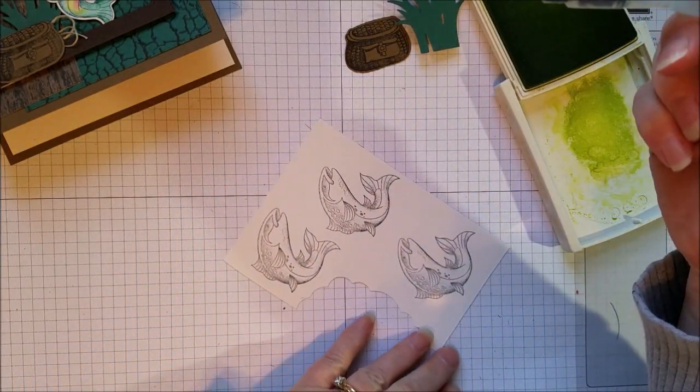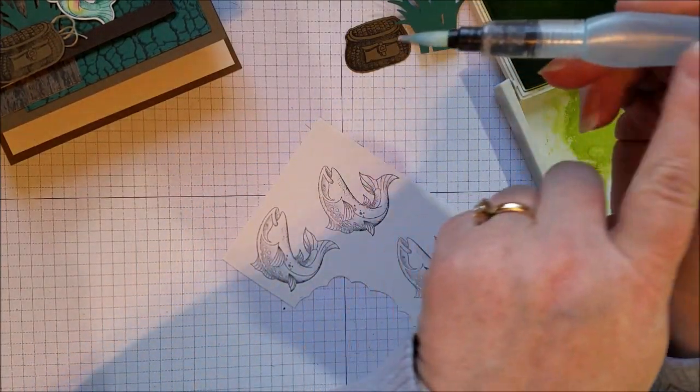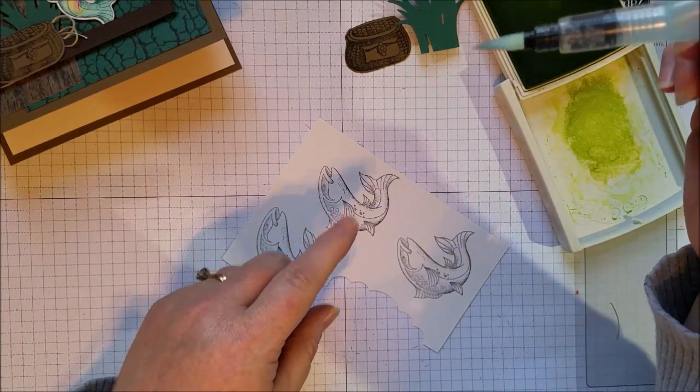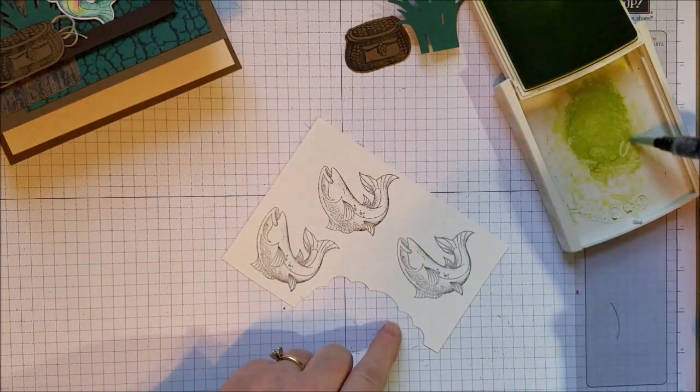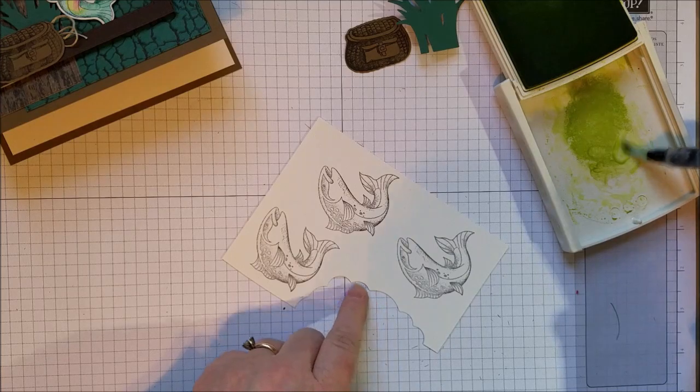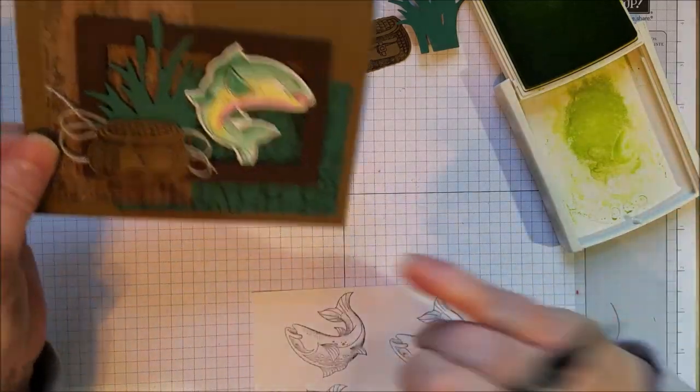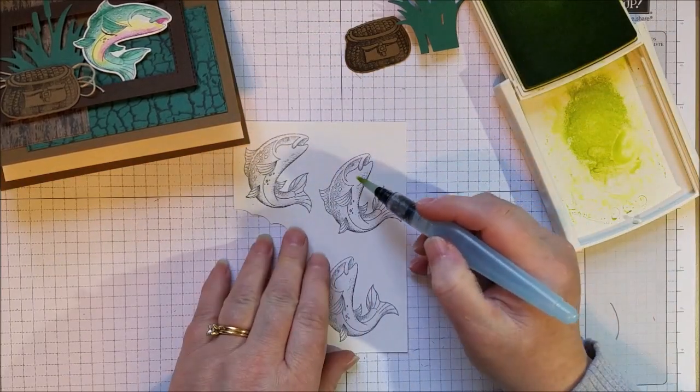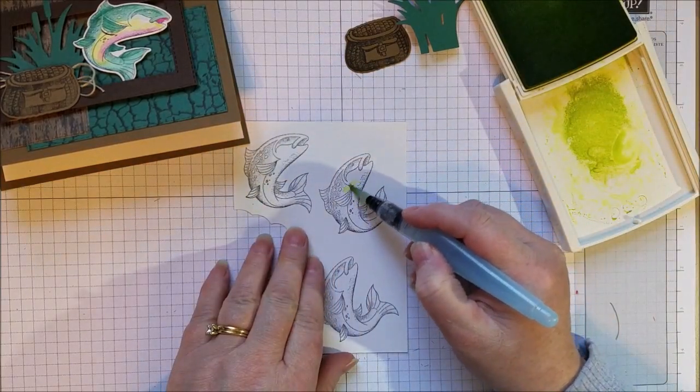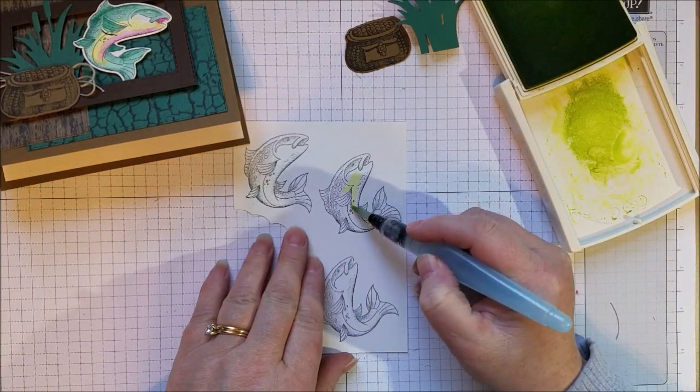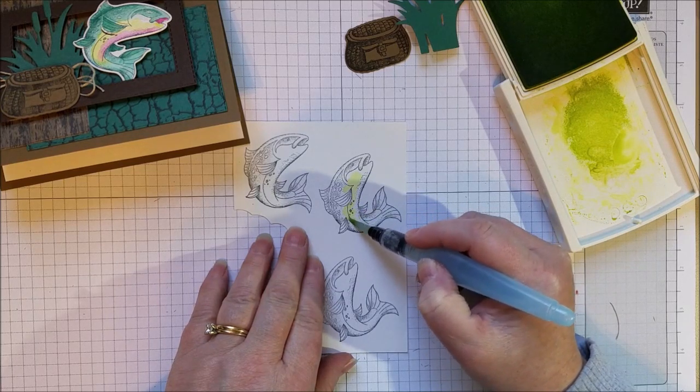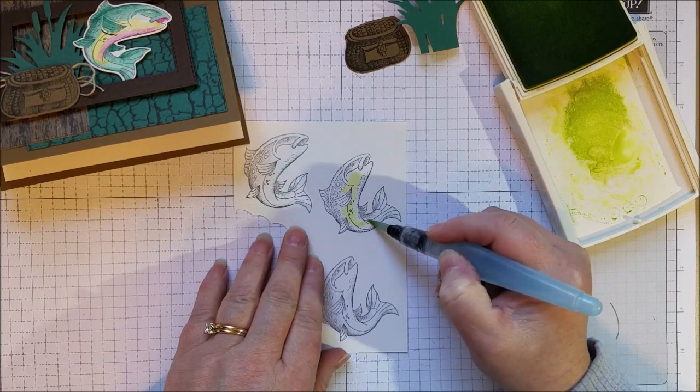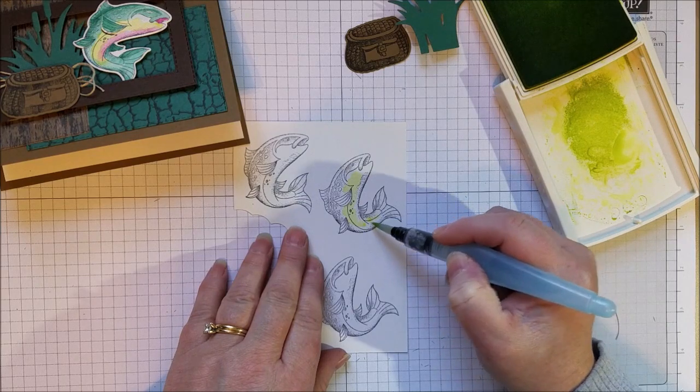So I'm using an aqua painter. I love these. They have a little bit of water in the barrel and you just squeeze slightly to get the tip wet and start painting. So I'm using the Lemon Lime Twist first because I want to do the center and then I'm going to blend towards that center. This is a pretty light shade so I don't have to be too careful. I'll talk about being careful when we get to the Tranquil Tide.